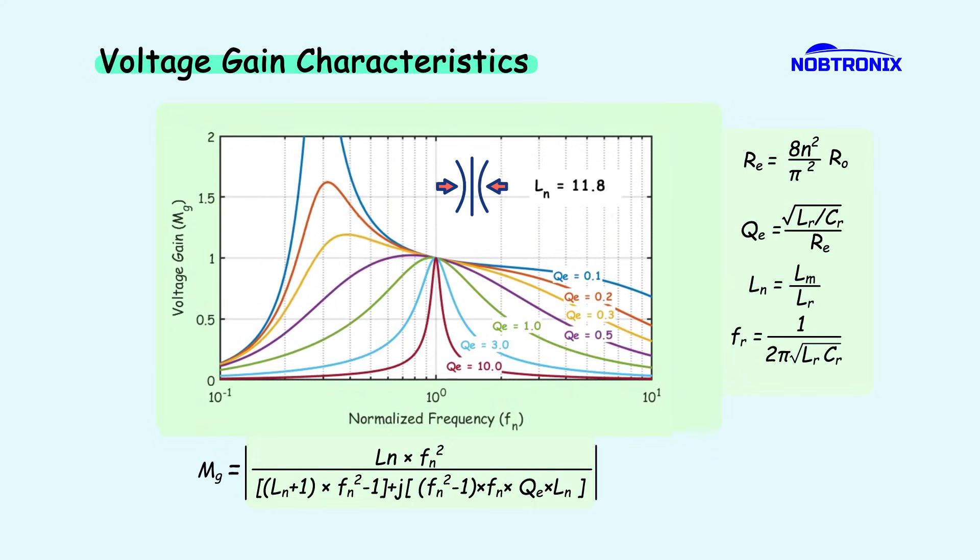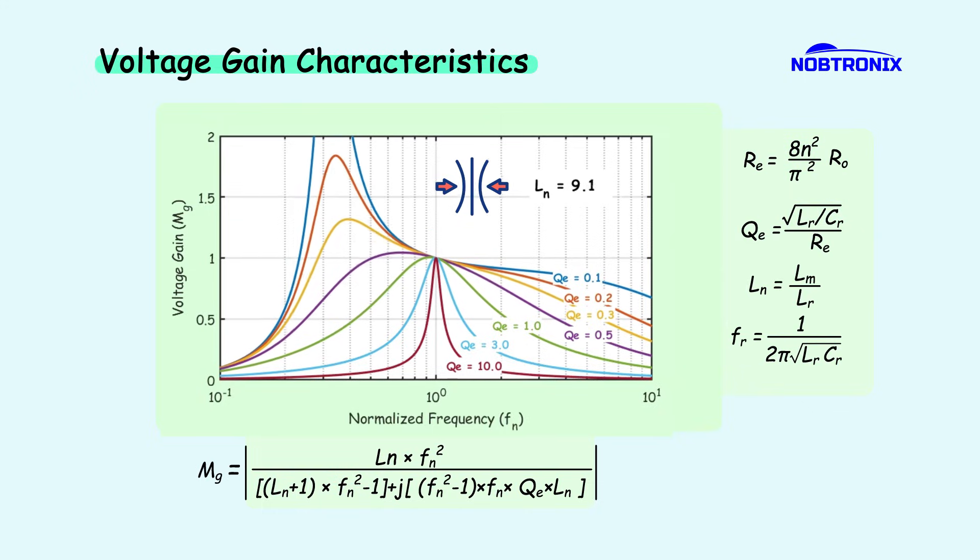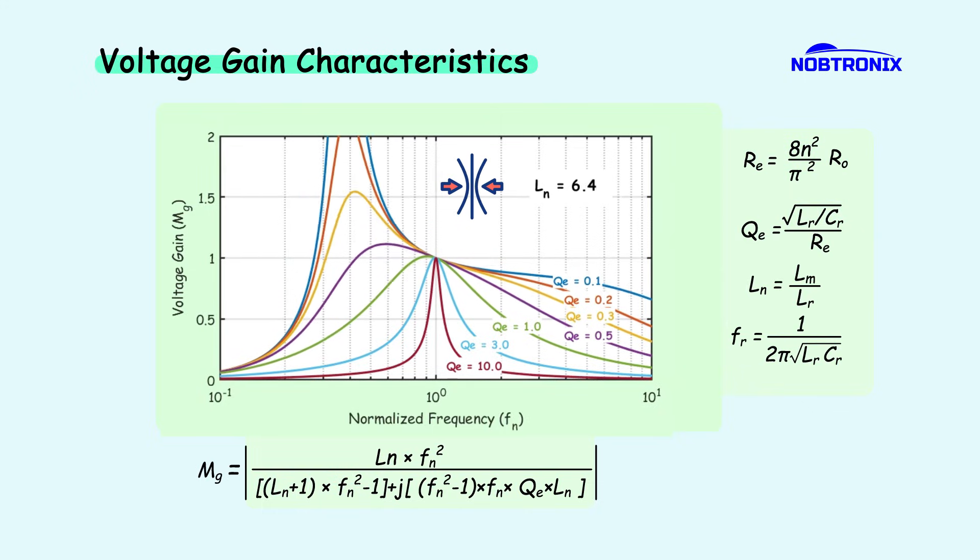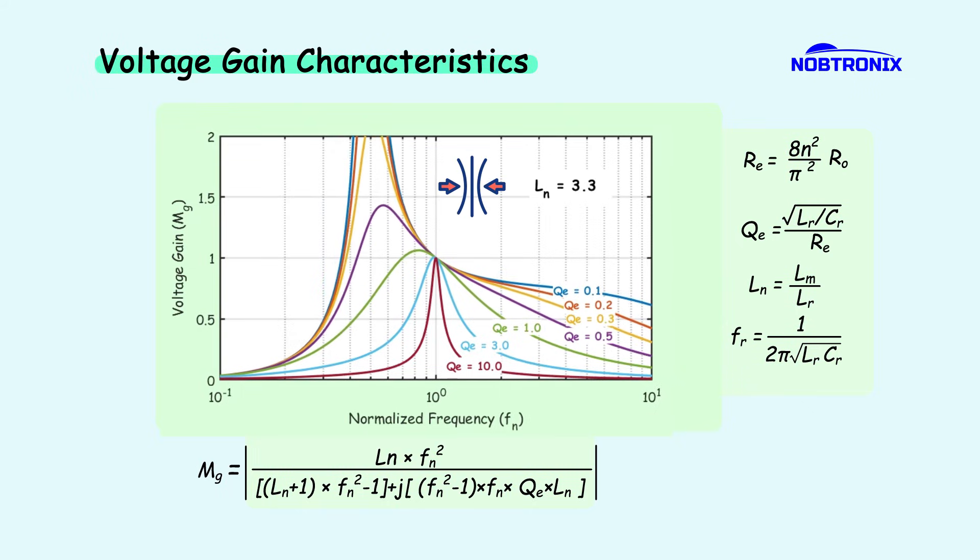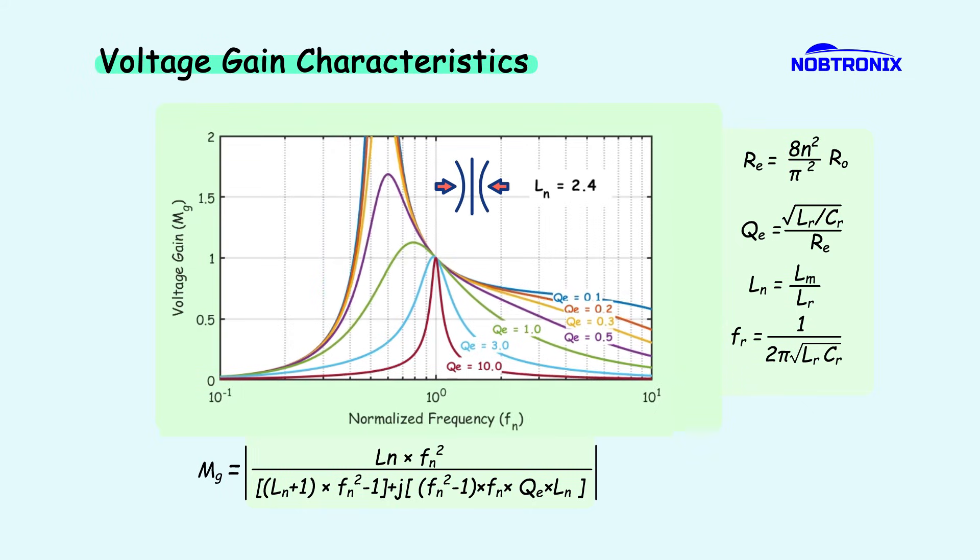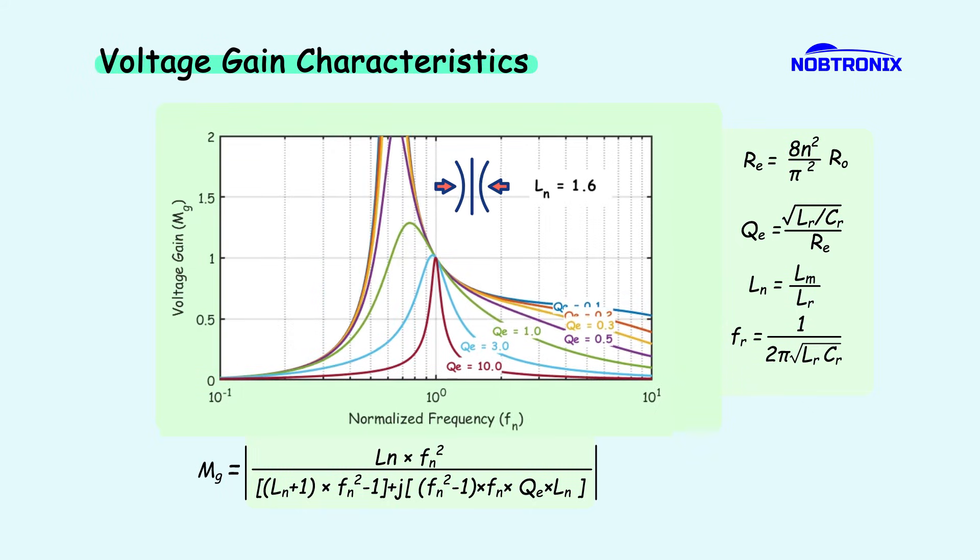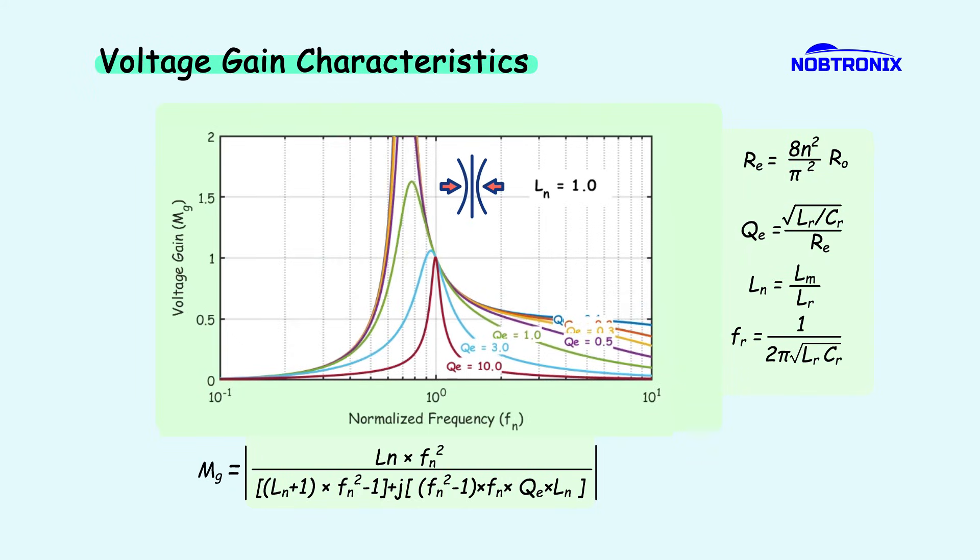Another key observation is the effect of reducing the ratio of magnetizing inductance to resonant inductance. When this ratio decreases, the voltage gain curve compresses, meaning that the gain changes more significantly with variation in frequency. This behavior makes the converter more responsive to frequency adjustments.